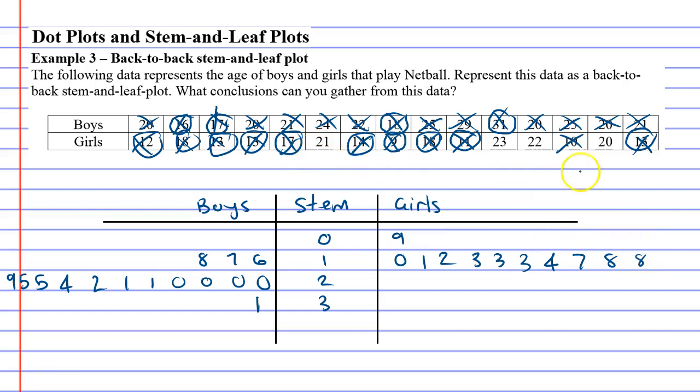Alright, now let's look at the 20s. Last of all we've got a 20 there. We've got a 21 year old, a 22 year old and a 23 year old. Awesome. Alright, now we've finished our back-to-back stem and leaf plot and we've got to make some conclusions from the data.